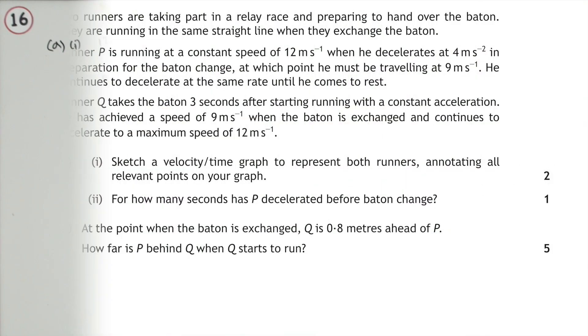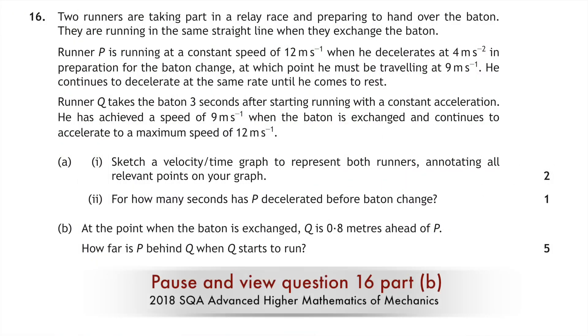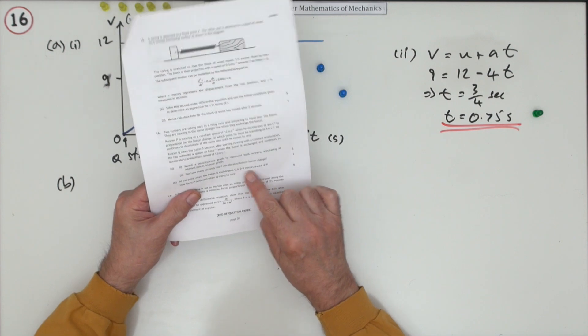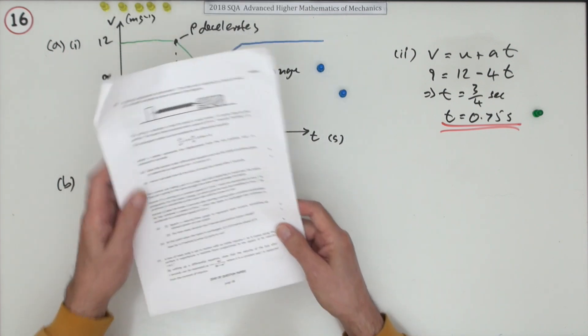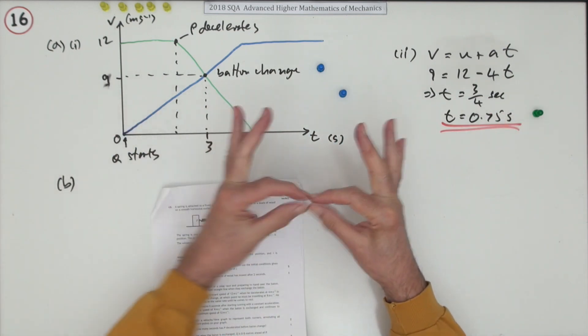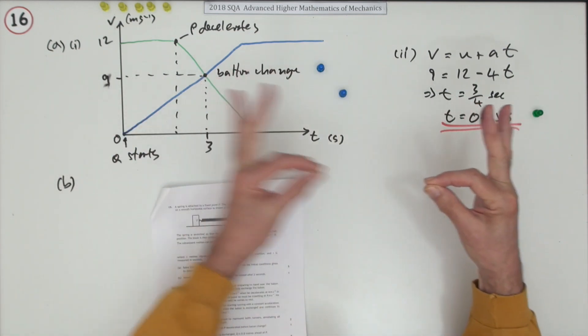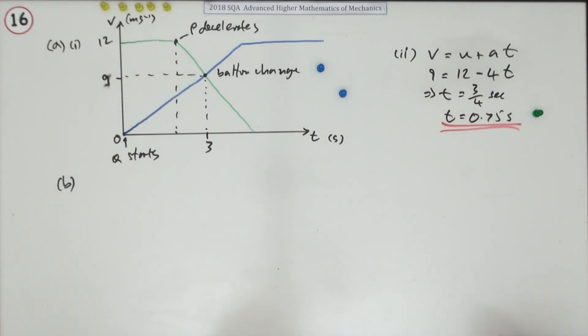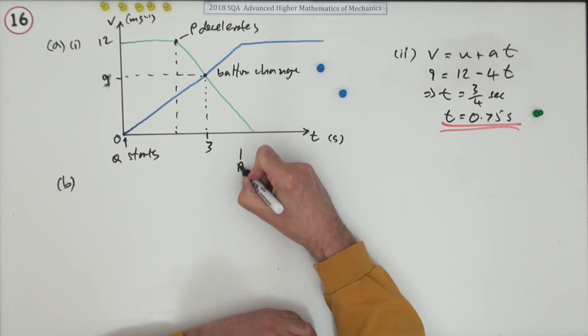Now part B. At the point where the baton is exchanged, Q is 0.8 metres ahead of P. Because of course they wouldn't be exactly on top of each other, their bodies would be apart as they pass it. How far is P behind Q when Q starts? If that's P then that's Q, at the baton change that's 0.8 of a metre.